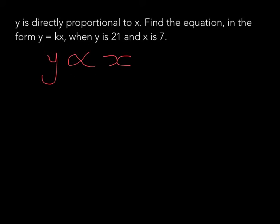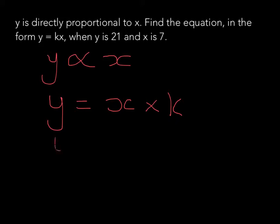Once we've got that step down, we then transform it into an equation format. So y equals x times something that links it to y — and the standard letter to use is k. We can rewrite this for consistency as y equals k times x.